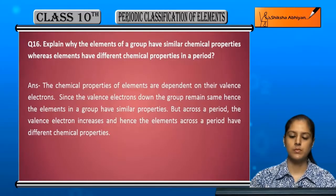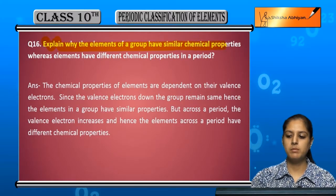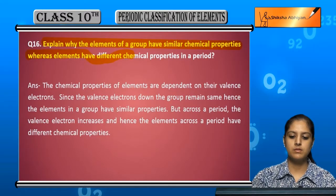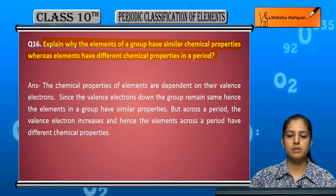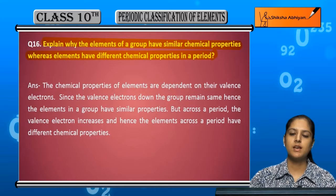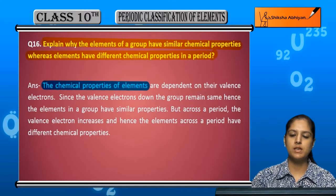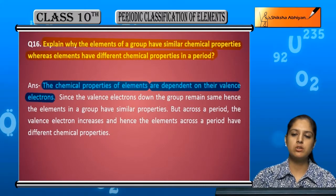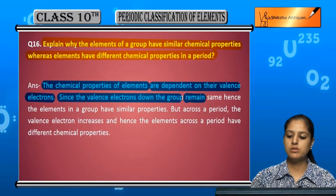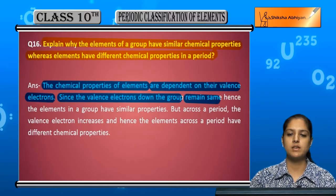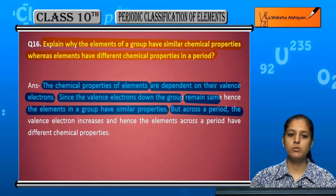Question 16: Explain why the elements of a group have similar chemical properties, whereas the elements of a period have different chemical properties. The elements of a period are different, but the elements of a group are the same. The chemical properties of elements are dependent on their valence electrons. Because the valence electrons are the same within a group, the chemical properties are the same. But when we move across a period, the valence electrons change.